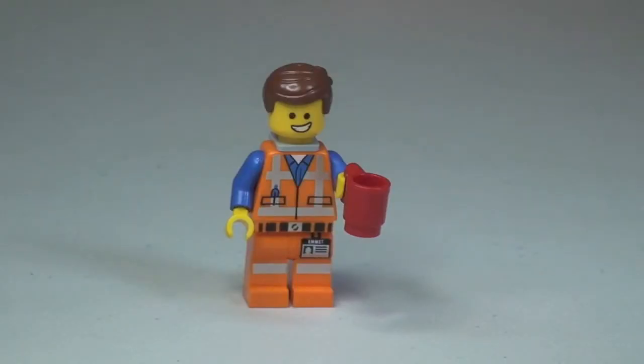Okay guys first up there's our minifig so that's Emmett. There you can see the printing on the legs and the front of the torso. The face printing has got two sides to this face and I'll show the other side in a second. He is holding a mug which you can see there in his left hand.